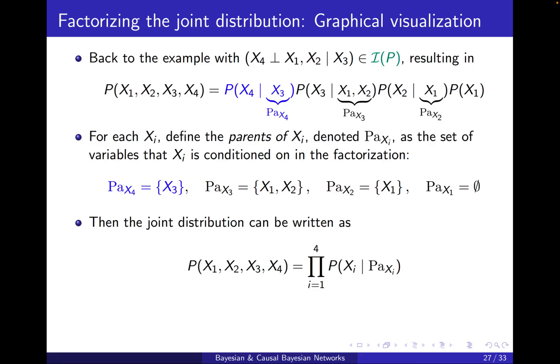By doing this, we can write down the joint distribution in a simple form. The factorization will be simply the multiplication of the probabilities of each term xi conditioned on its parents.